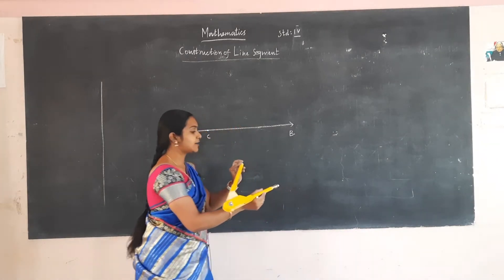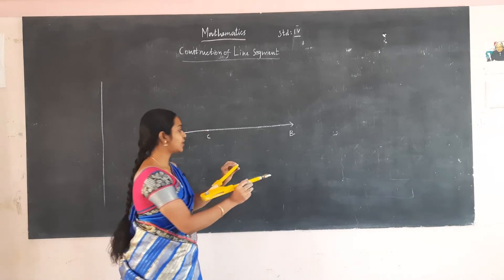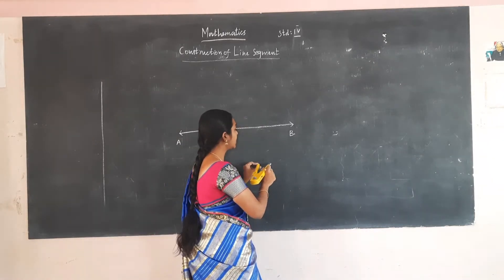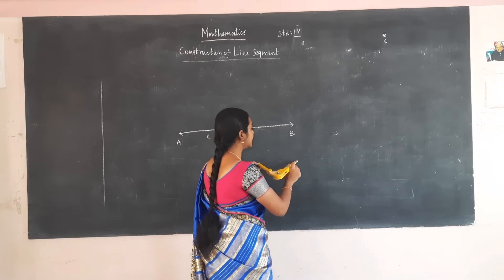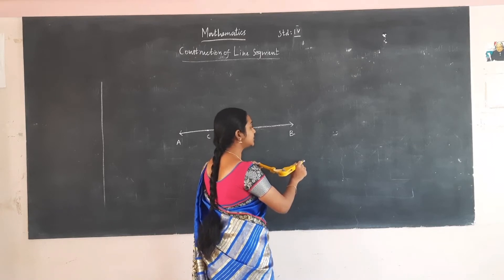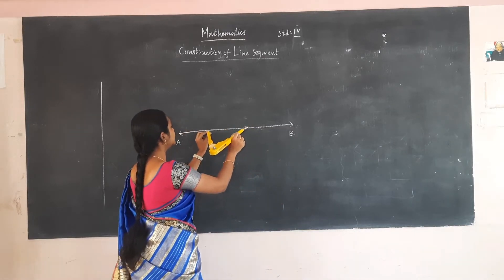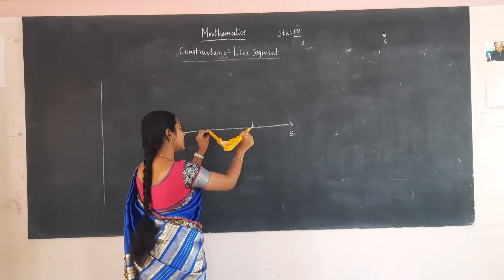You have to keep the sharp point on 0 on your scale and move towards the right until you reach 4.2. Once you reach 4.2, stop, bring the compass here, and keep the sharp point on C and draw an arc.